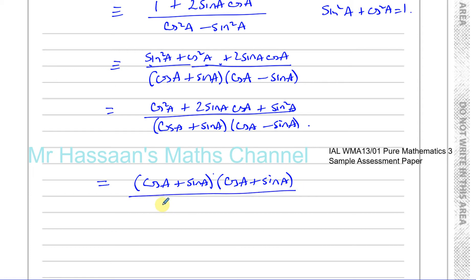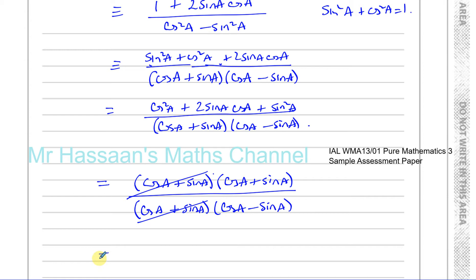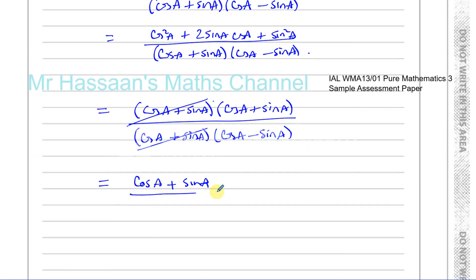So we have (cosA + sinA)(cosA + sinA) over (cosA + sinA)(cosA − sinA). The (cosA + sinA) factors cancel, and we are left with cosA plus sinA over cosA minus sinA, which is exactly what we had to prove. And that's as required.